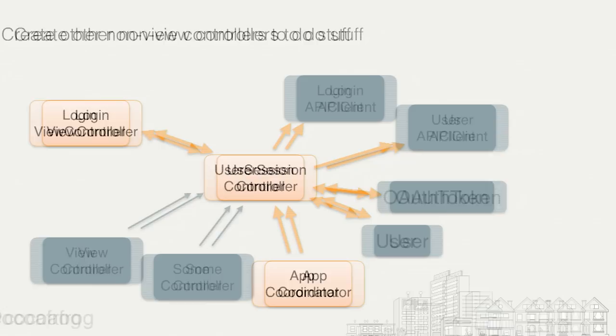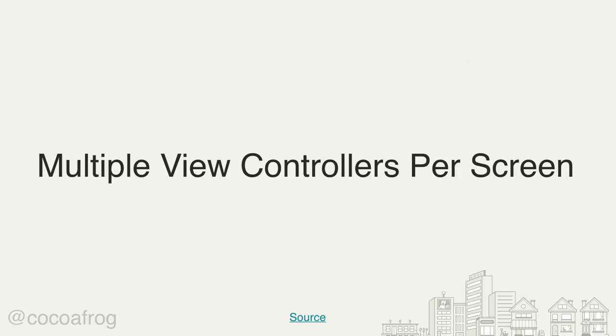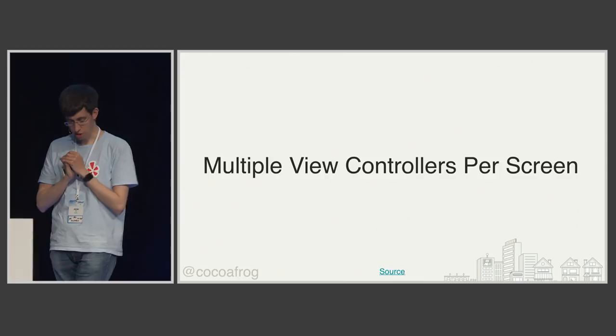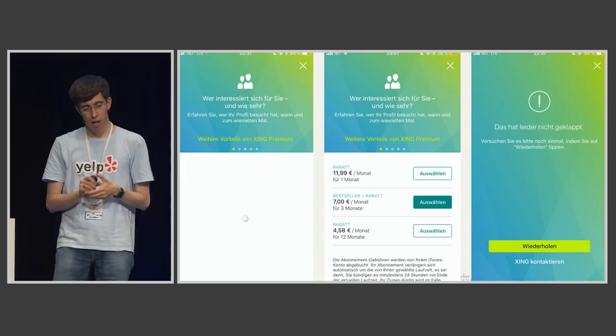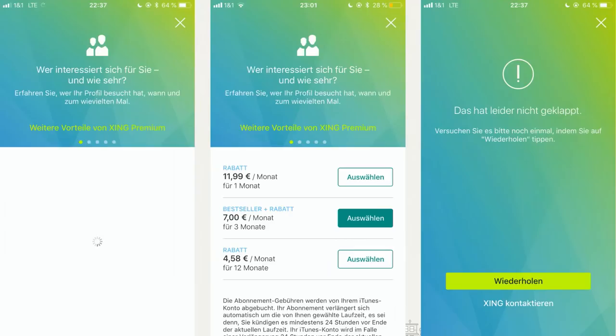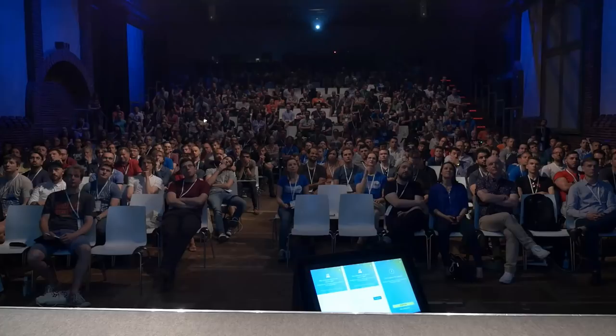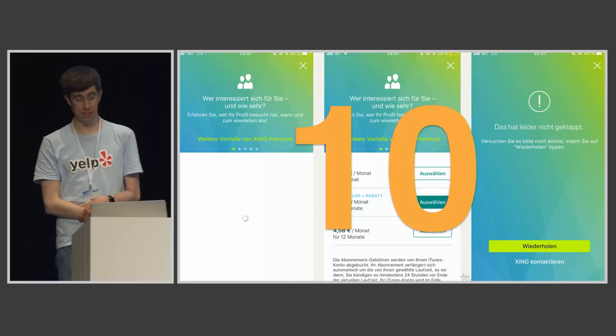Another very nice pattern is having multiple view controllers per screen. People often think there must be one view controller per screen — that's not true. Here's a counter example from the Xing app: the purchase screen shows some products. You see a loading screen, a loaded screen when you have products, and an error screen. How many view controllers do you think are in this flow? There are actually 10 view controllers.